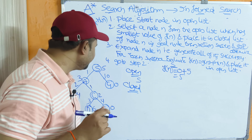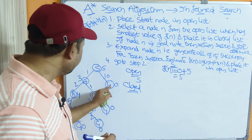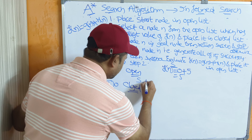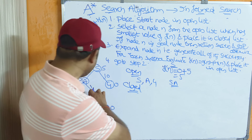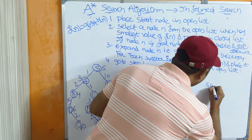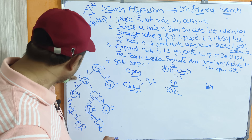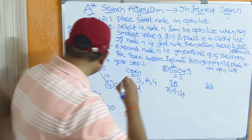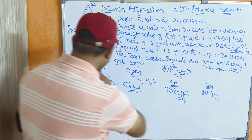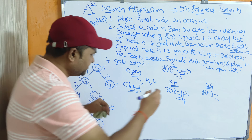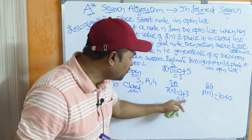Now open list contains S. Generate successors of S: A and G. Compute f(n) for path S→A: g(n) = 1, h(A) = 3, so f = 1 + 3 = 4. Compute f(n) for path S→G: g(n) = 10, h(G) = 0, so f = 10 + 0 = 10. Out of 4 and 10, the minimum value is 4.